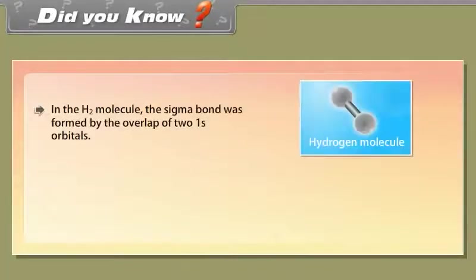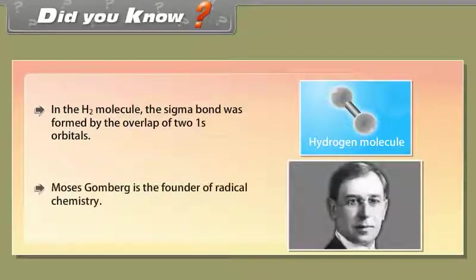Did you know? In the hydrogen molecule, the sigma bond was formed by the overlap of two 1s orbitals. Moses Gomberg is the founder of radical chemistry.